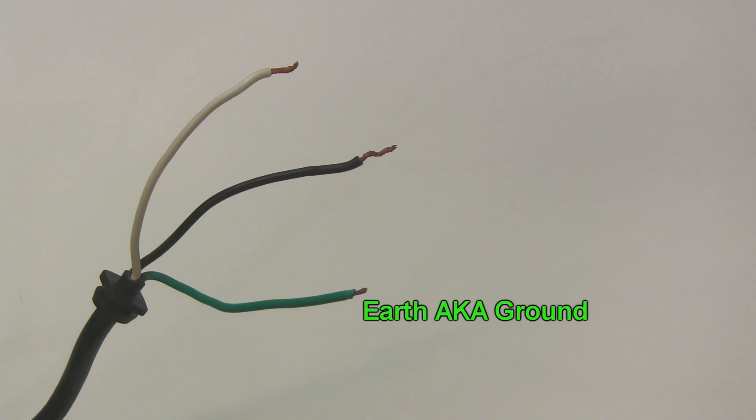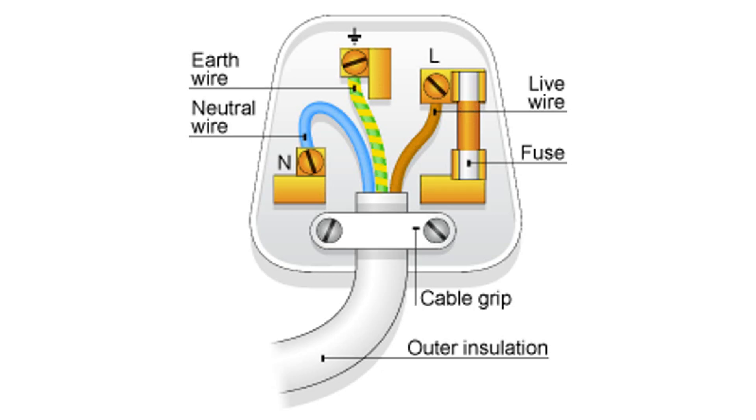In Europe, the wires do the same thing, but the color convention is different. The live wire is usually brown, the neutral wire is usually blue, and the earth wire is green and yellow.